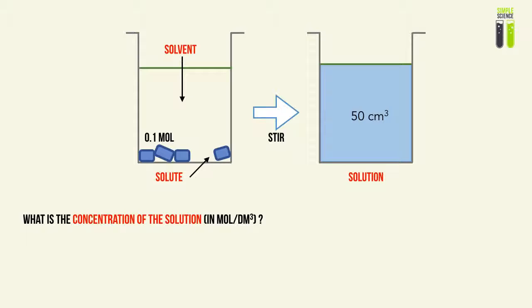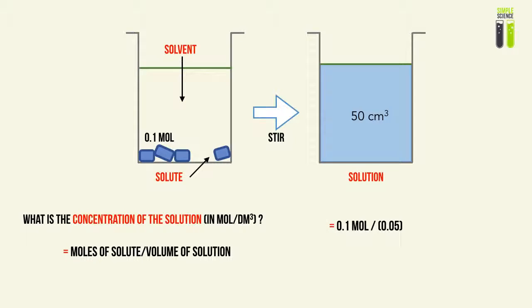Let's do an example. What is the concentration of the solution if we dissolve 0.1 moles of copper sulfate to form a solution of 50 centimetres cubed? Concentration equals moles of solute divided by total volume of solution. So we take 0.1 moles divided by 50 cm³, which converts to 0.05 dm³, and this gives us a concentration of 2 molar.